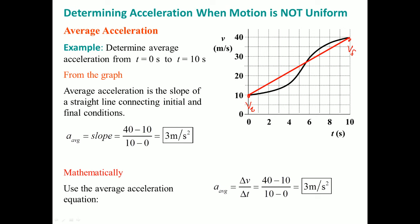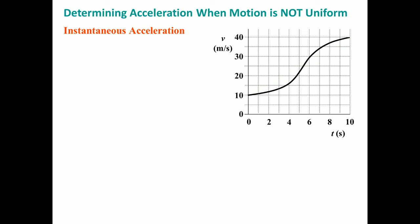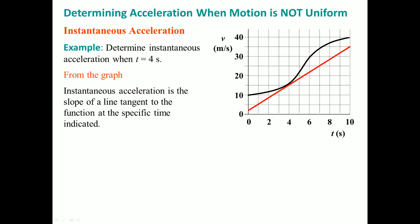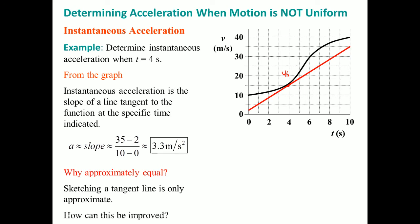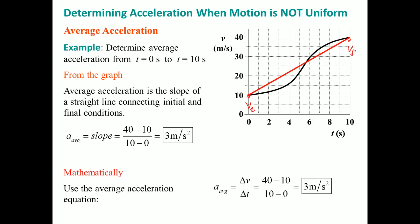This is average acceleration. To find instantaneous acceleration, we look at an exact location — in this case at 4 seconds — giving 3.33 meters per second squared. To go from average to instantaneous, we make delta T approach zero. Originally the interval is large, but as we shrink delta T, the slope approaches the instantaneous value.